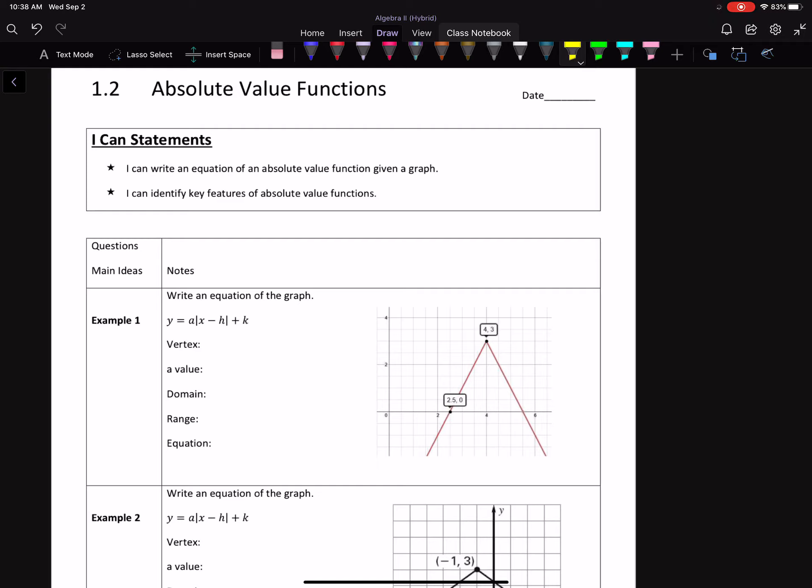Starting off, this won't always be given to you, but that is just the general absolute value function form. You have to be able to identify A, H, and K. Plug them into that form, you're done.